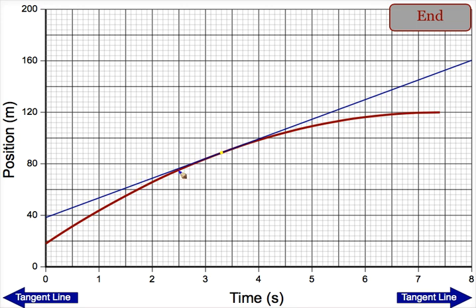The tangent line should have the exact same slope as the curve does at that point. Once you draw your tangent line, then hopefully remember that velocity is simply the slope of your position versus time graph.